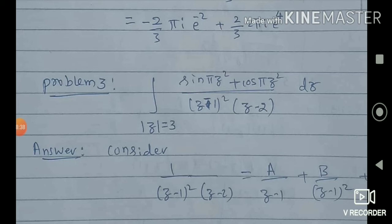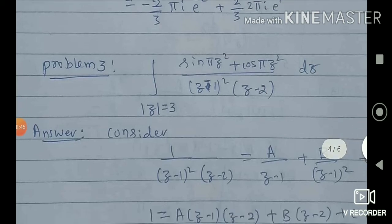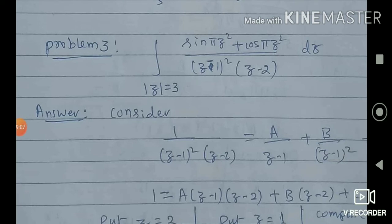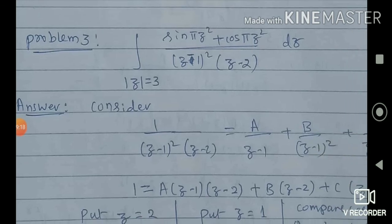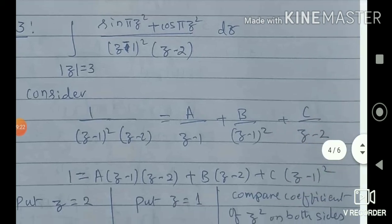We shall see one more problem that is a little bit different. The function f(z) is sin(πz²) plus cos(πz²), which is analytic everywhere — no problem there. But the denominator contains (z minus 1) squared and (z minus 2). Cauchy's Integral Formula applies when the denominator is z minus a. When we have (z minus 1) squared in the denominator, we must use the generalized Cauchy's Integral Formula.